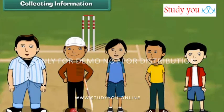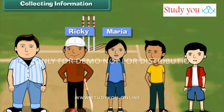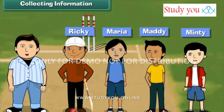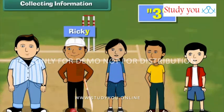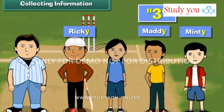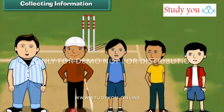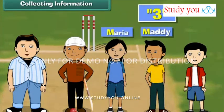Today, we all friends are planning to play cricket. Meet my friends: Ricky, Maria, Maddy and Minty. Let us play a game with their names first. How many names end with the same alphabet Y? Three names end with the same alphabet Y — Ricky, Maddy and Minty. And how many names start with the same alphabet? Three names — Maria, Maddy and Minty — begin with the same alphabet M.